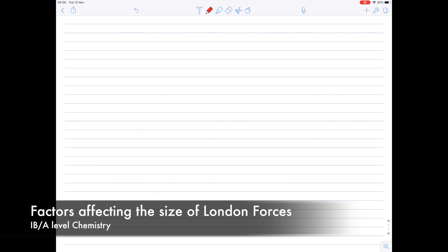So what factors affect how strong that London force is? Well, firstly, the number of electrons. Secondly, the size of the electron cloud. And thirdly, the shape of the molecule.